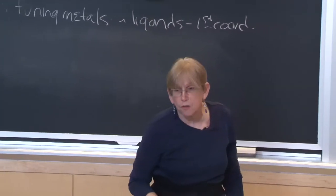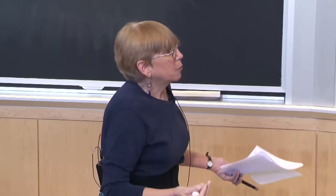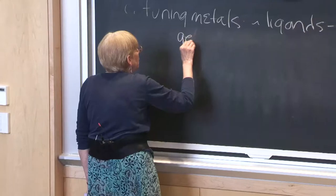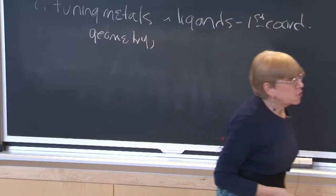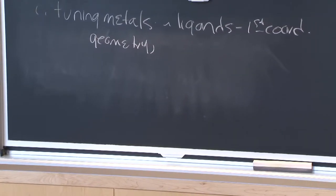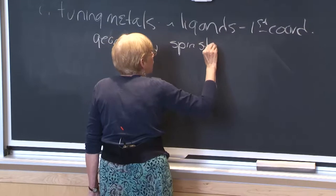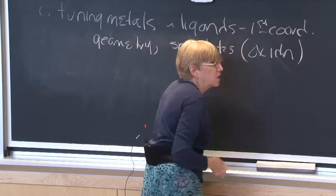Also important is the geometry around the metals. In the cases we were looking at last time with the Irving Williams series, they were looking at an octahedral environment. But most of you know you can have tetrahedral environments, trigonal bipyramidal, square planar — there are all kinds of environments, so you need to think about the geometry. We'll see later on with transition metals we need to look at the spin states, which can control the oxidation and reduction.